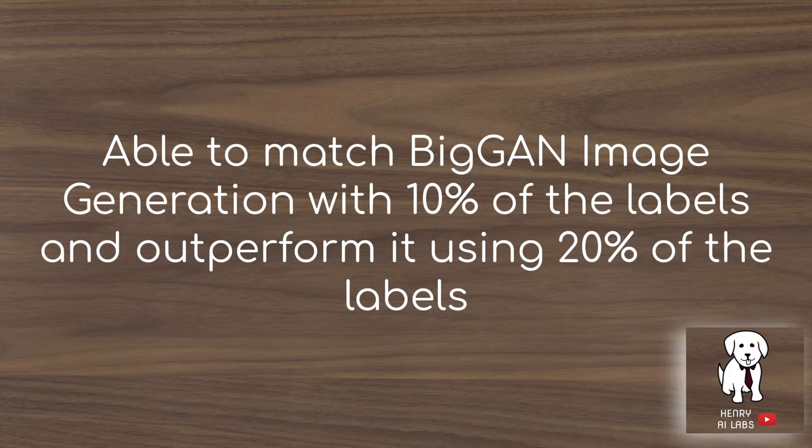This is super important because in the wild there is tons of data on things like Instagram, Google Images, and YouTube, and it's really impossible to scale up labeling these datasets for the future of representation learning, generation, and computer vision.